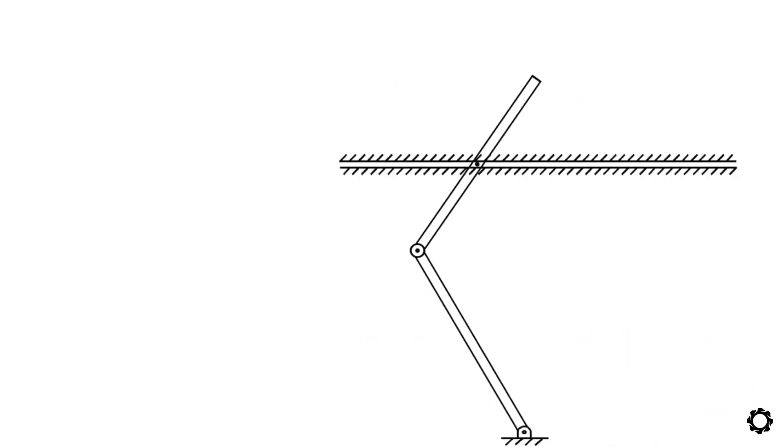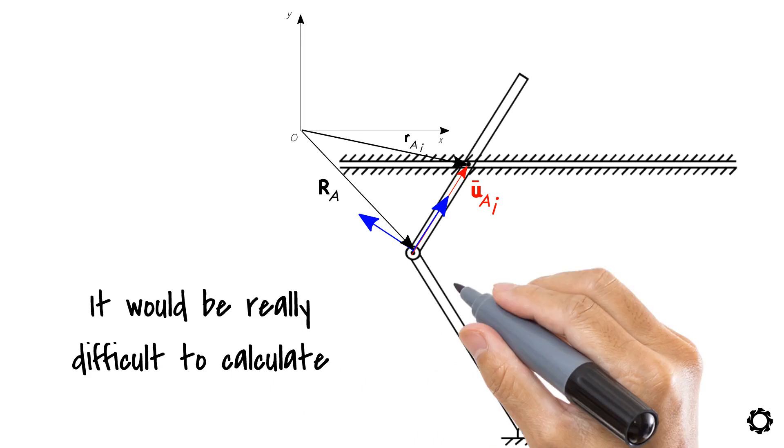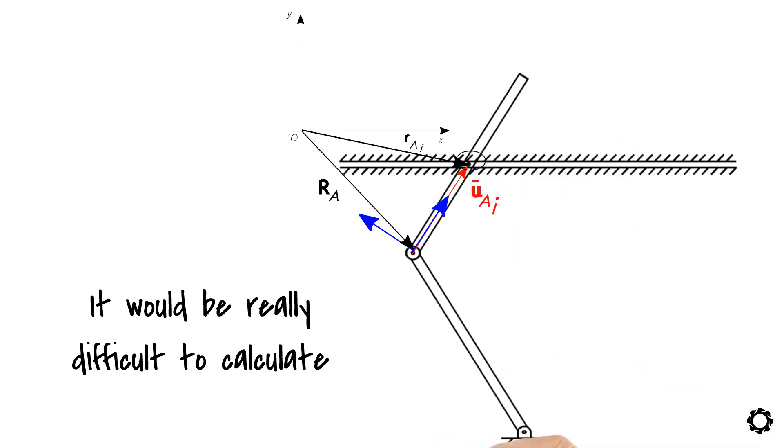Imagine a mechanism with complex movements, and you would like to know the position vector, velocity, or acceleration of a point which is also moving complexly. It would be really difficult to calculate. Instead, it is much easier to know the position of a point with respect to a local system, a system where the point can be identifiable by its X bar A and Y bar A components.